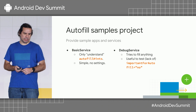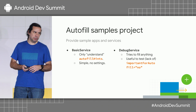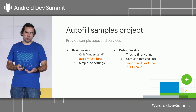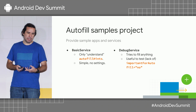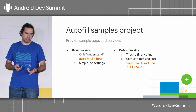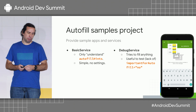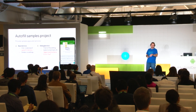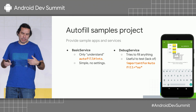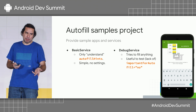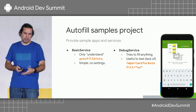We have another service that's quite the opposite — it's called Debug Service. This one tries to fill anything. If you don't use Autofill hints, it will still try to autofill based on your resource IDs. This is useful to test what happens if you're not tagging your views with importantForAutofill equals no. For example, going back to my SMS app, when you click on the 'to' field, you'd see a pop-up with some autofill data labeled 'to', which is just the name of the resource ID. You can see how confusing that would be for a user.